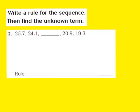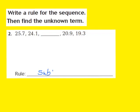Now let's take a look at question number 2. The directions say to write a rule for the sequence and then find the unknown term. For question 2, the terms given are: 25 and 7 tenths, 24 and 1 tenth, then an unknown term, then 20 and 9 tenths, and 19 and 3 tenths. My first question is: are my terms increasing or decreasing? Looking at the given terms, I can see they are decreasing, which means part of my rule is going to be subtraction, since the numbers are getting smaller.